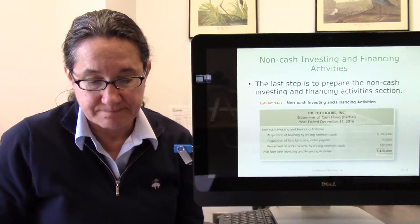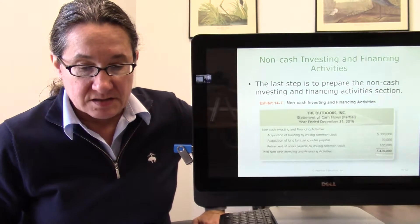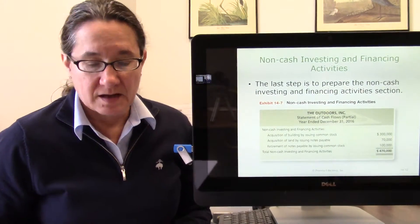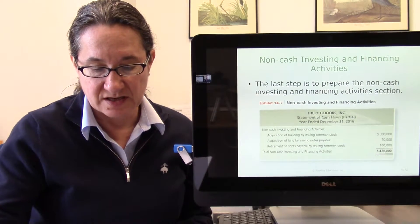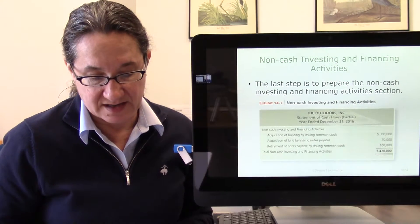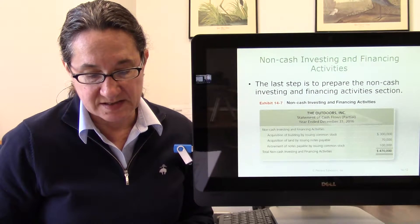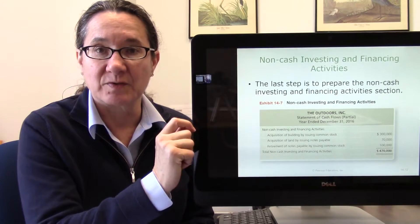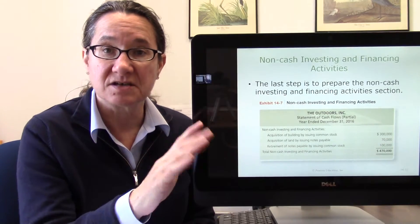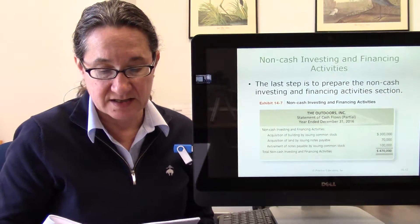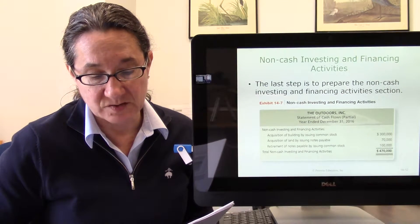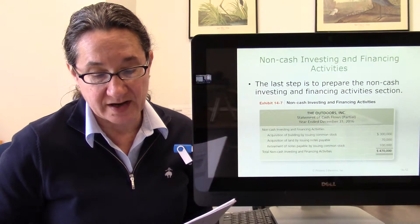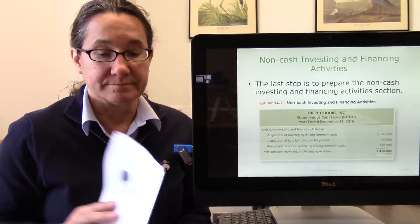Sometimes there's some non-cash investing and financing, like last chapter when we traded stock for a building. The last step is to prepare the non-cash investing and financing section. This section appears as a separate schedule or in the notes. It's not a formal part of those three sections. It's not in the cash flows from operating, investing, or financing. It's not cash. If you traded stock for a building there was no cash. In this case there was an acquisition of a building by issuing common stock, acquisition of land by issuing a note payable, and a retirement of notes payable by issuing common stock. Your total non-cash activities were four hundred seventy thousand dollars.